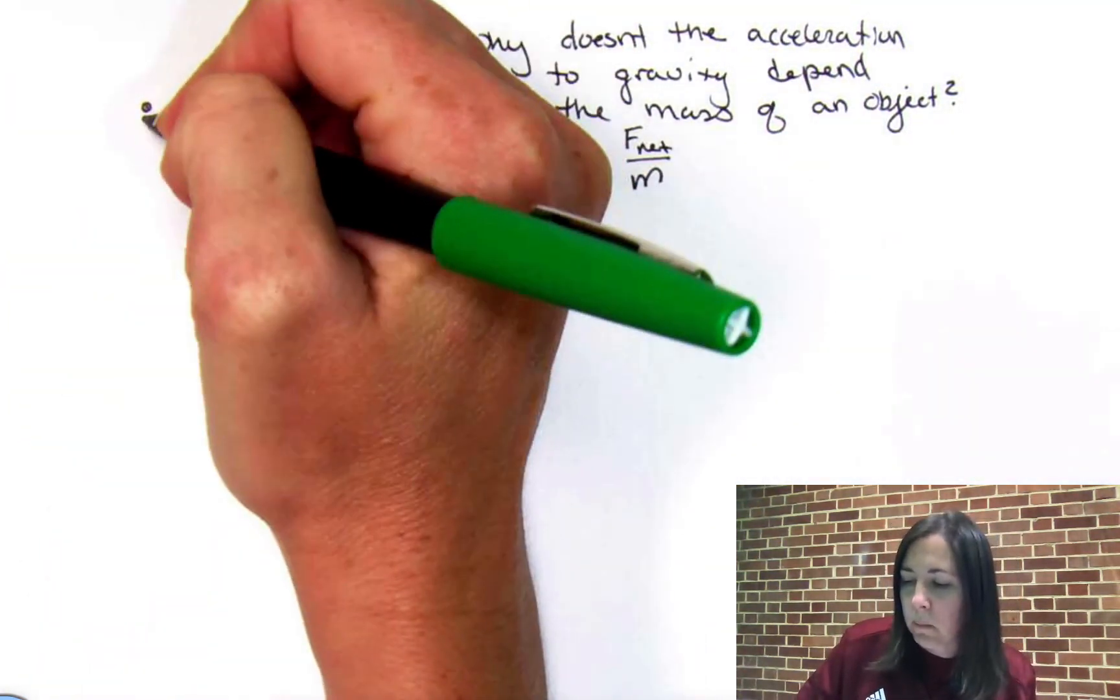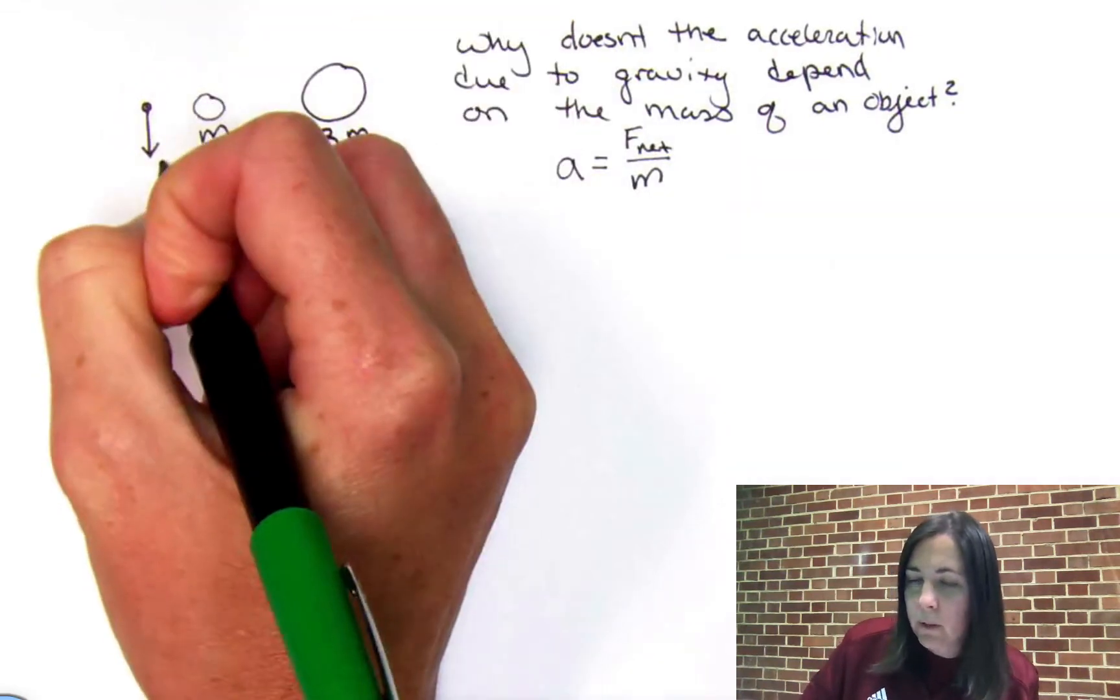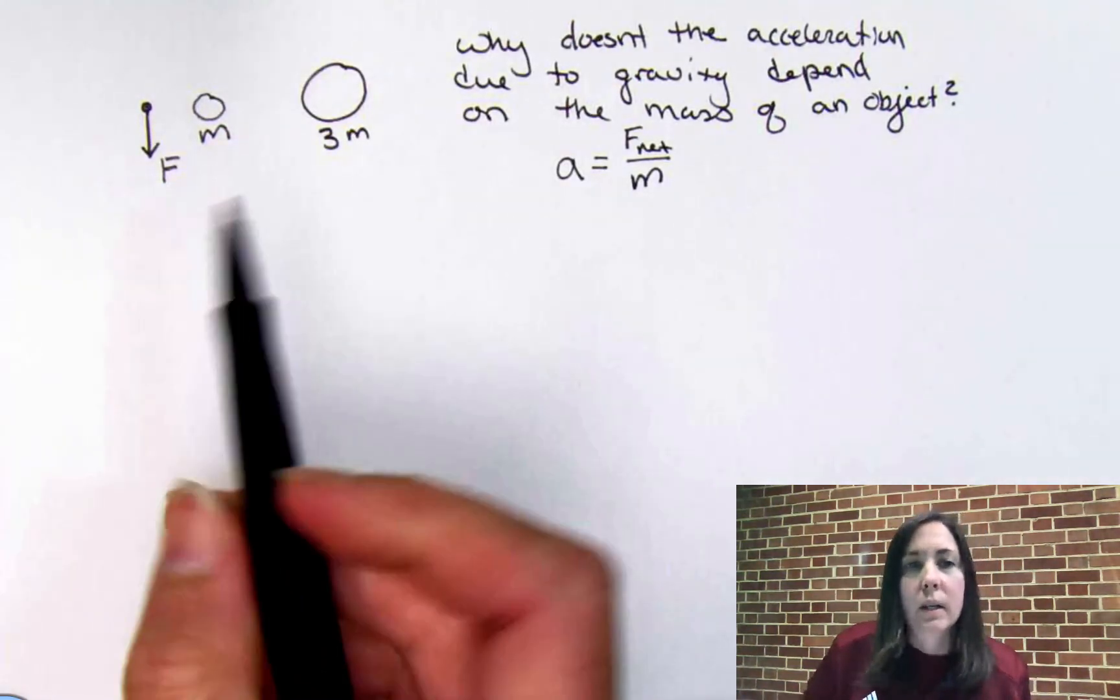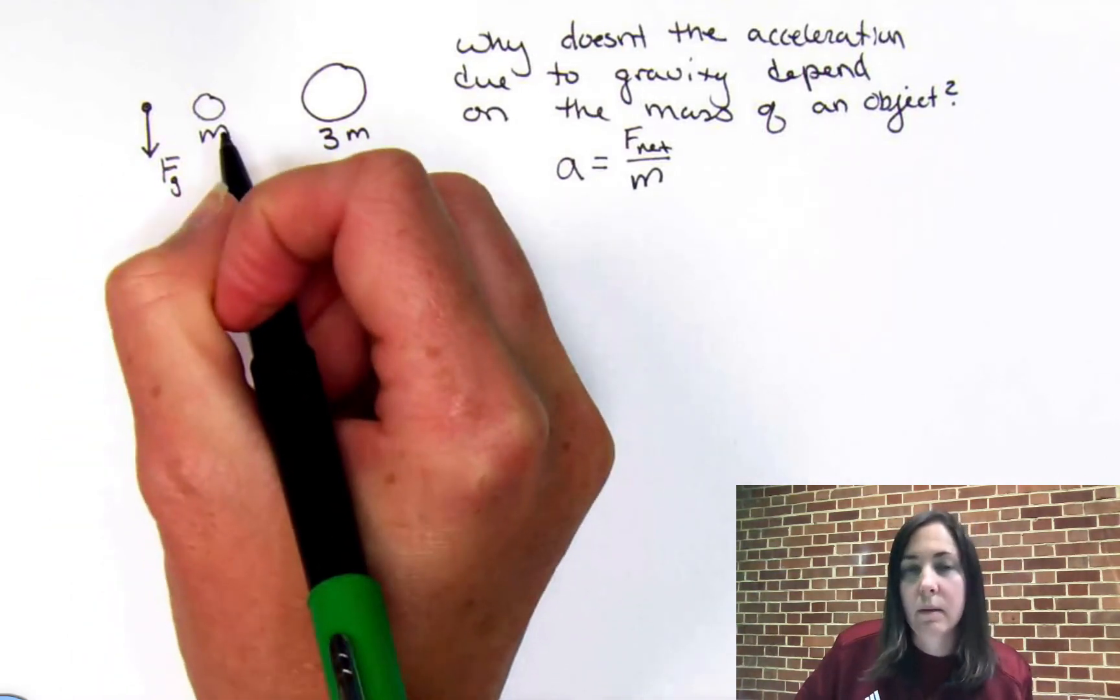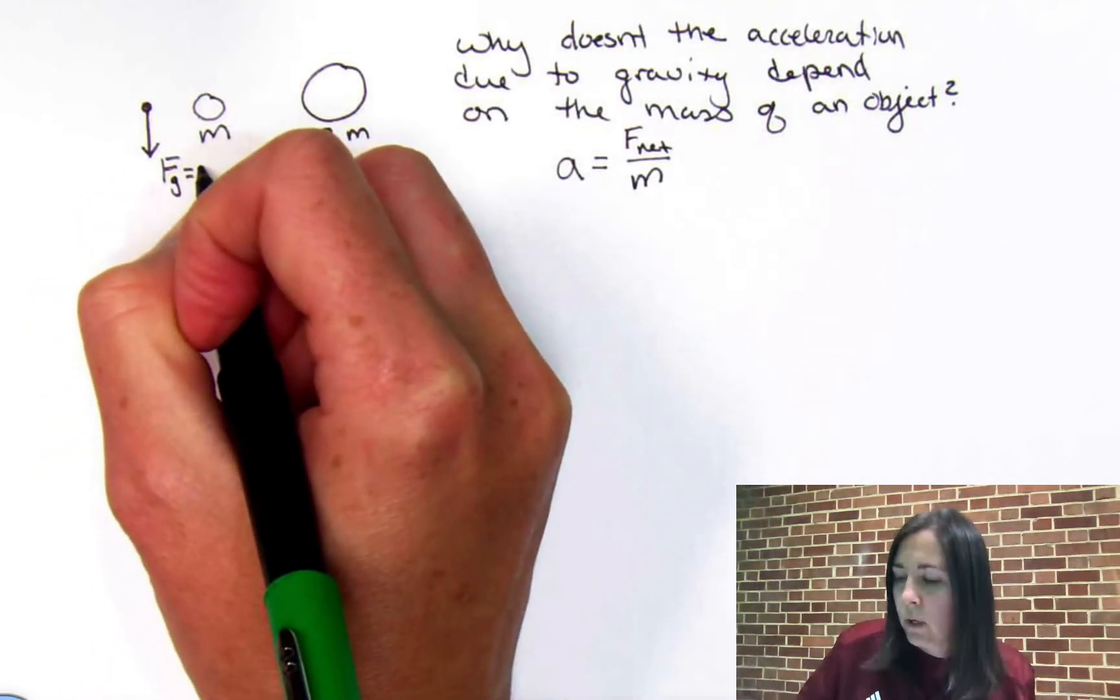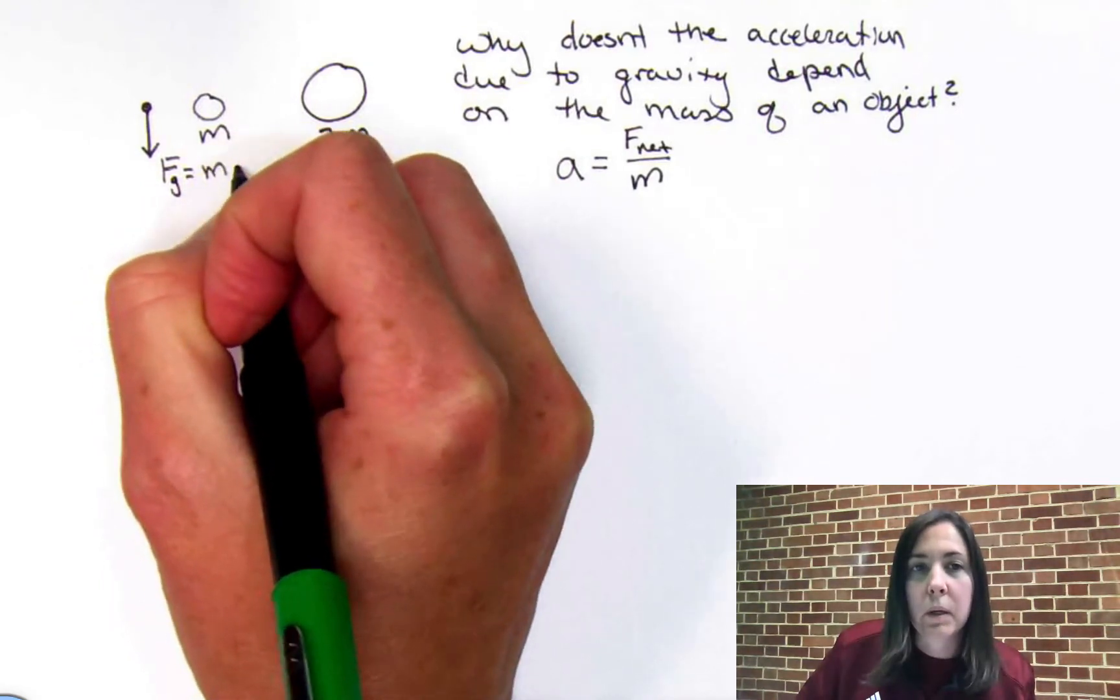And so, drawing the free body diagram of these two rocks, the force of gravity acting on this little rock is going to be the mass of the rock times gravity, or the gravitational field strength, mg.